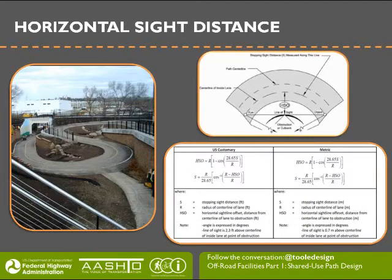Similar to vertical curves addressing sight over hilltops, horizontal sight distance addresses the inability to see around corners. Note that the horizontal sight distance formula on page 5-23 also contains a printing error; the correct formula is shown in the presentation. This formula accounts for the travel path and the offset to a sight obstruction on the side of the path, and is very similar to the formula in the AASHTO Green Book for horizontal sight distance for vehicles.